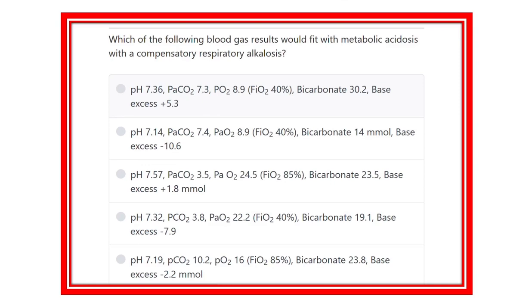Hello everyone, welcome to another question and answer session. This is the physiology portion, and one of the most important topics is the ABG. The question is: which of the following blood gas results would fit a metabolic acidosis with compensatory respiratory alkalosis?